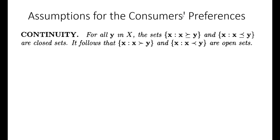Now let us discuss the continuity assumption. Suppose y is a series of bundles — y1, y2, y3, and so forth — belonging to the consumption set. Similarly, x is a series of bundles — x1, x2, and so on — all belonging to the consumption set. This is the first point. The second point concerns the following set.